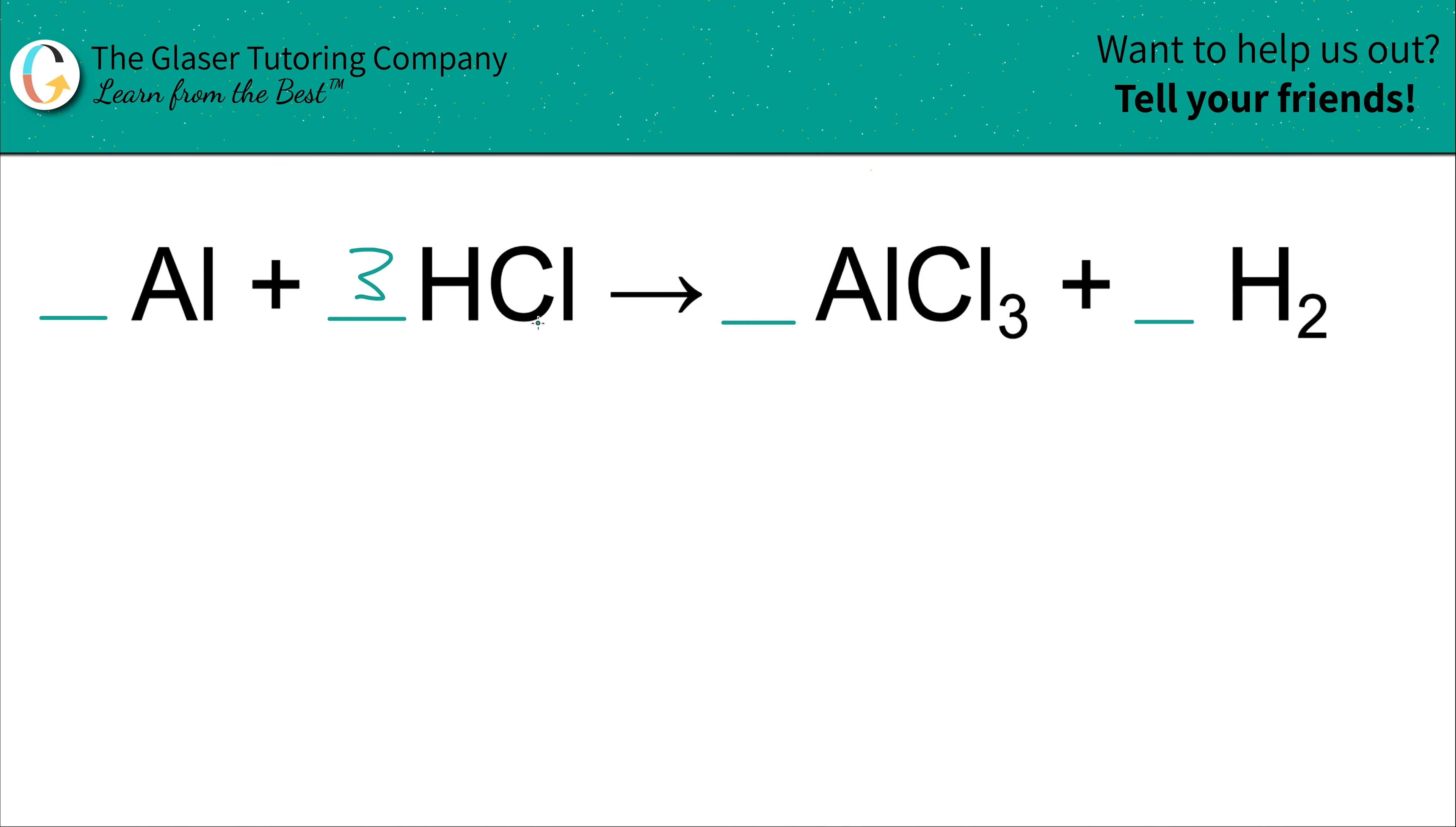Now let's go back to the hydrogen. Once you place this coefficient in, you must take it into account. So in other words, you don't have one hydrogen here on the left side anymore. You have three hydrogens. You have to think multiplicatively three times one. I'm going to set up a little math equation here.